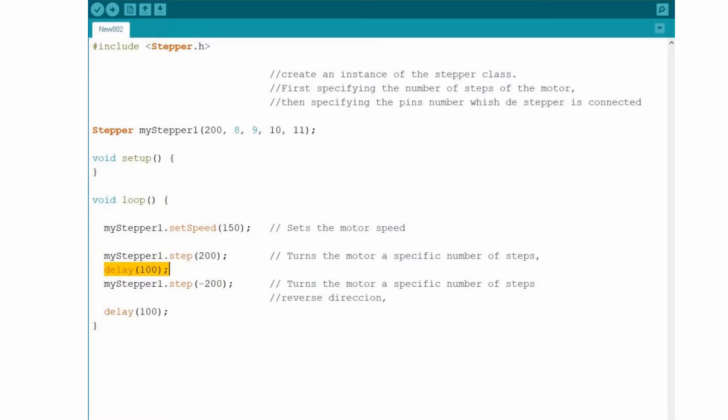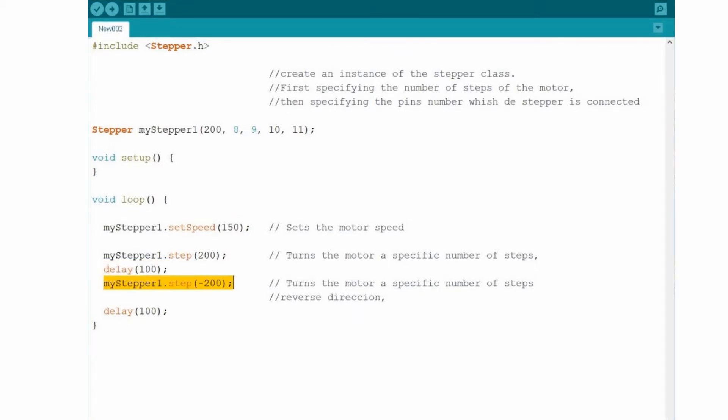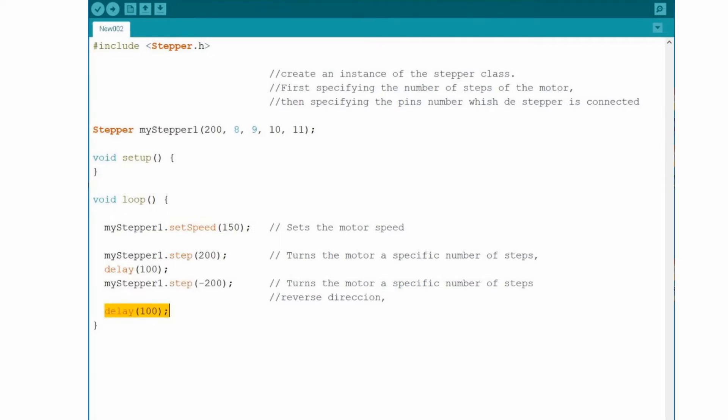Wait 100 milliseconds. Then advance 200 steps in a reverse direction. Then wait 100 milliseconds. Then start the loop again.